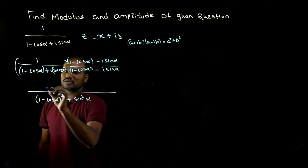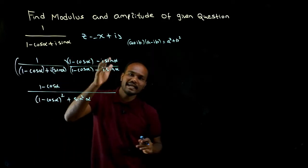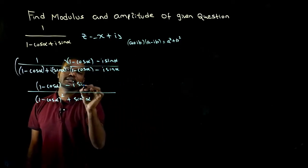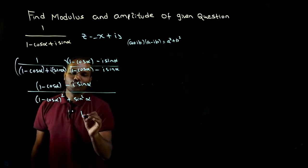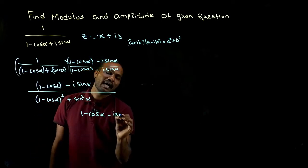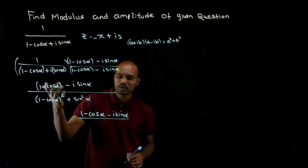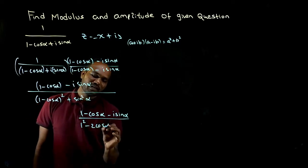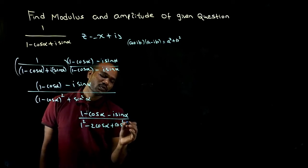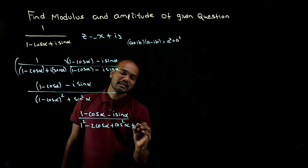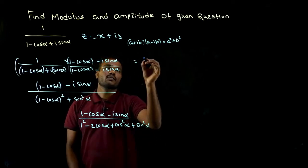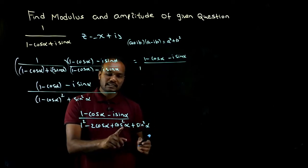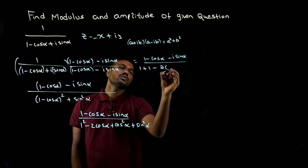So the denominator becomes one minus cos alpha whole square plus sine squared alpha. Expanding using the identity a minus b whole square equals a squared plus b squared minus 2ab: one squared minus two cos alpha plus cos squared alpha, then plus sine squared alpha.